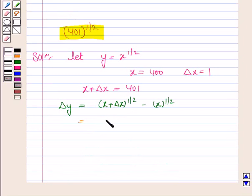So this is equal to 401 to the power 1 by 2 minus 400 to the power 1 by 2. So this implies 401 to the power 1 by 2 equal to delta y plus 400 to the power 1 by 2.